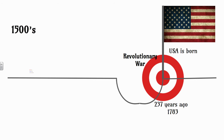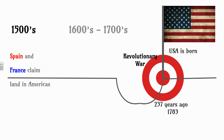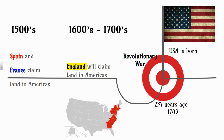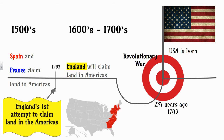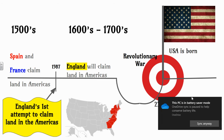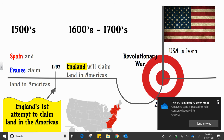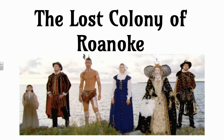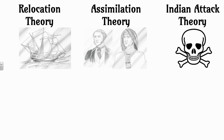Where it all began was in the 1500s — that's when Spain and France were claiming land, like on that color-coded map. But England will not start claiming land until the 1600s, and it will take them all the way through part of the 1700s, over 100 years, to claim those 13 colonies. England did try to claim land in the Americas in 1587, and that story was the lost colony of Roanoke.